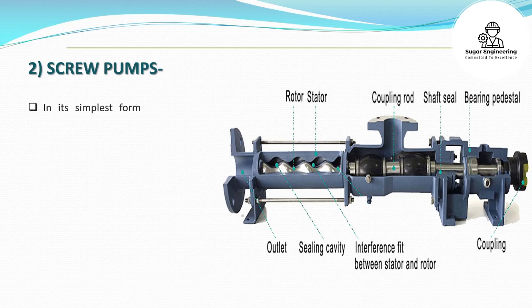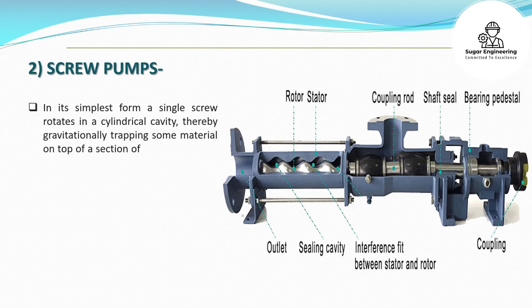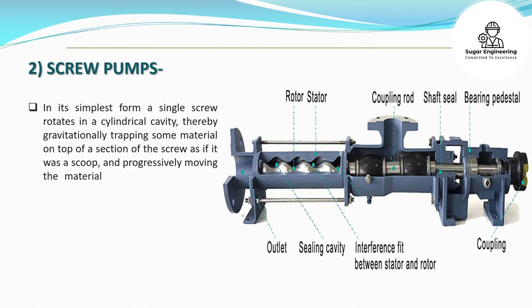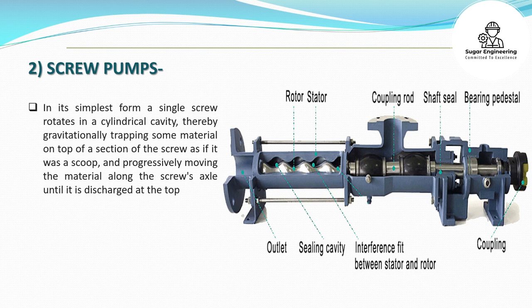2. Screw Pumps: In its simplest form, a single screw rotates in a cylindrical cavity, thereby gravitationally trapping some material on top of a section of the screw as if it was a scoop, and progressively moving the material along the screw's axle until it is discharged at the top.